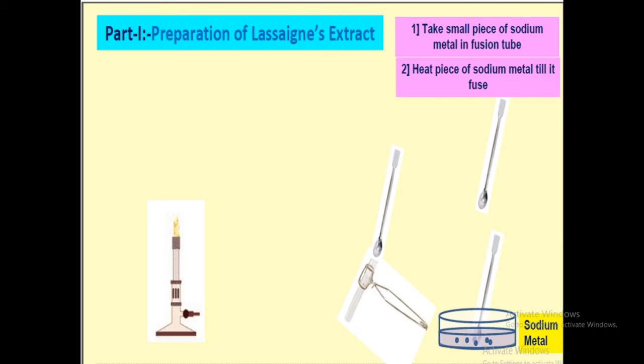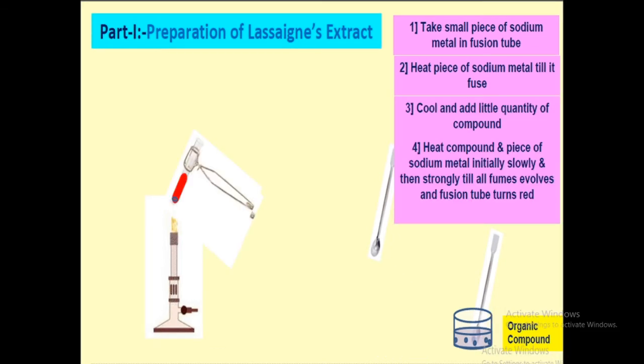Then we have to add a small amount of organic substance in it. Once we add the organic substance, then we have to place the mixture of organic substance and fused sodium metal under the flame.